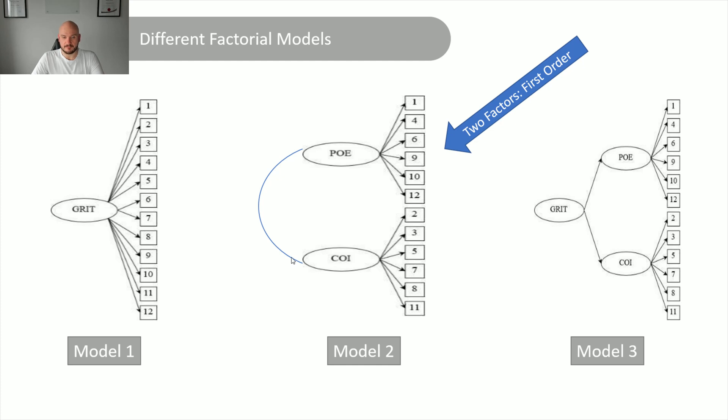So first order factor, all the items load directly onto one latent factor. This two-factor or three-factor first order model is you've got three different latent factors, and they're made up of different items, but they are correlated with one another.